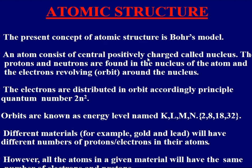The entire positive charge of the atom resides in the nucleus. Protons and neutrons reside in the nucleus, while electrons revolve around the nucleus in circular orbits. Different materials have different numbers of protons and electrons in their atoms, but for the same material, all atoms have the same number of electrons and protons.